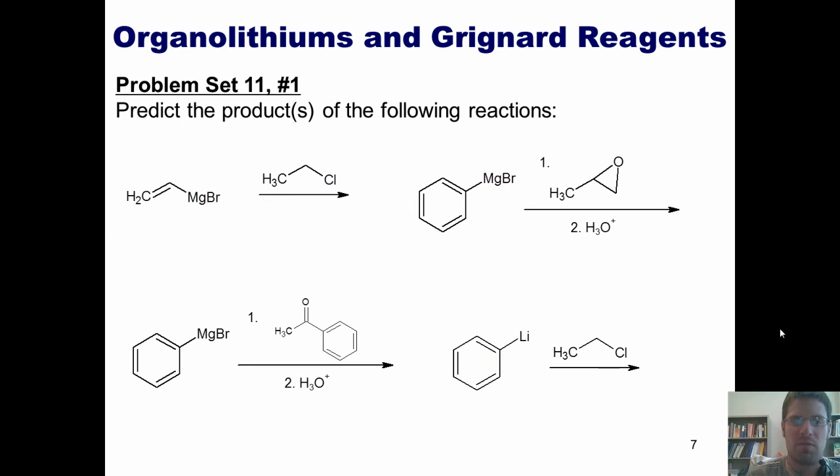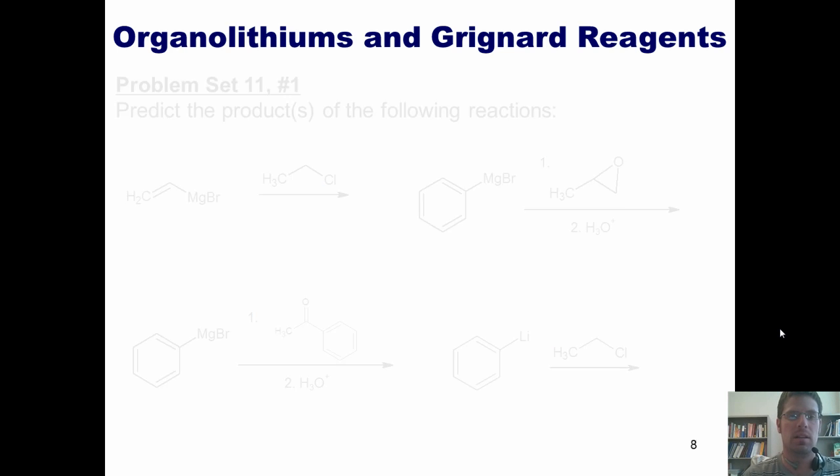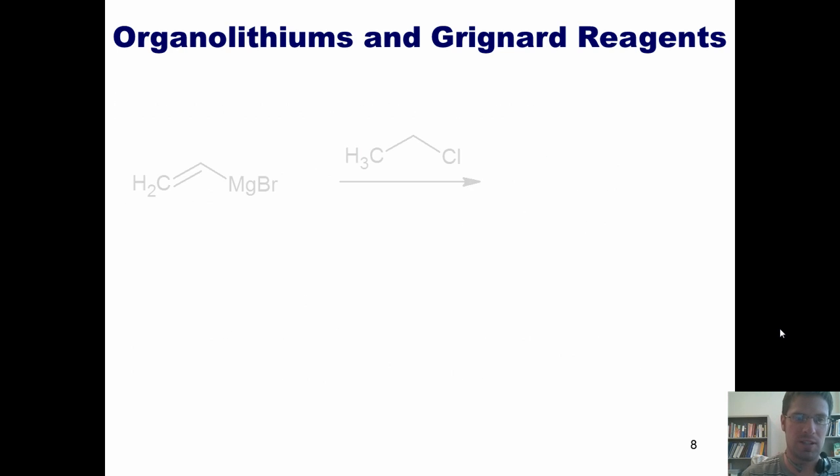This brings me to this set of problems. I want you to predict the products from the following reactions. Now, if you want to, this would be a great place to pause the video and attempt these on your own first because I'm going to show you the answers momentarily. Let's begin by taking a look at our first example. I have this molecule, which is called vinyl magnesium bromide. It's a Grignard reagent reacting with this molecule, ethyl chloride. Before we begin, I'm going to go ahead and number the carbons in both my starting material and my reactant just so that we can keep things straight. I've numbered them as shown here. One, two, three, four. You'll see why momentarily.